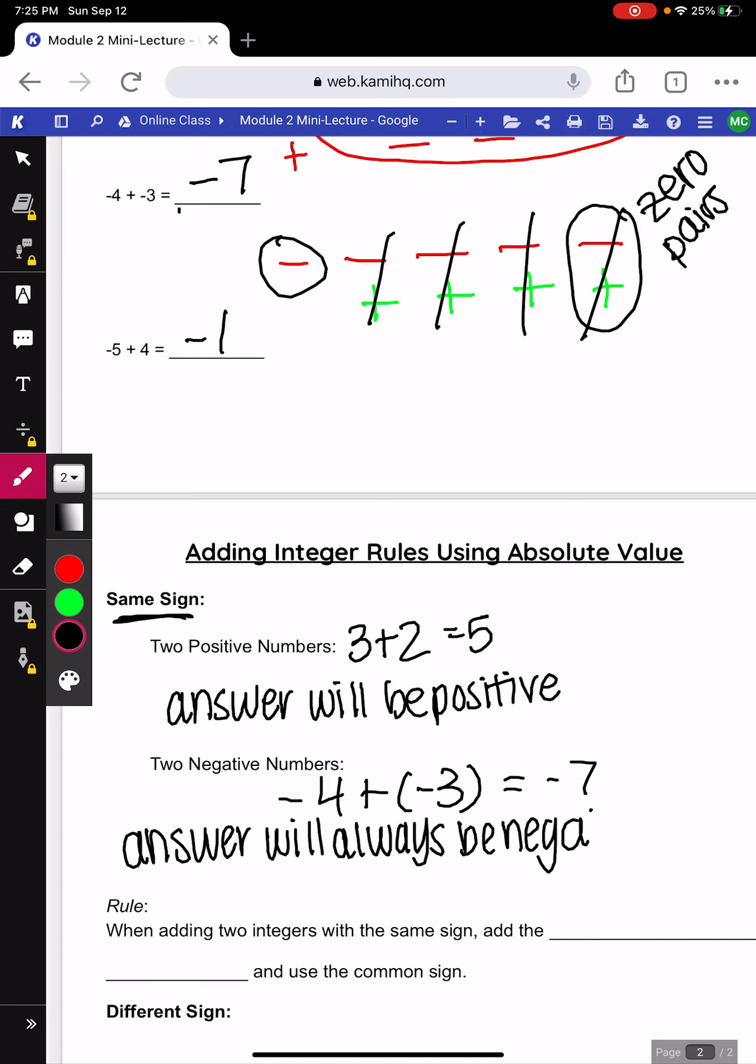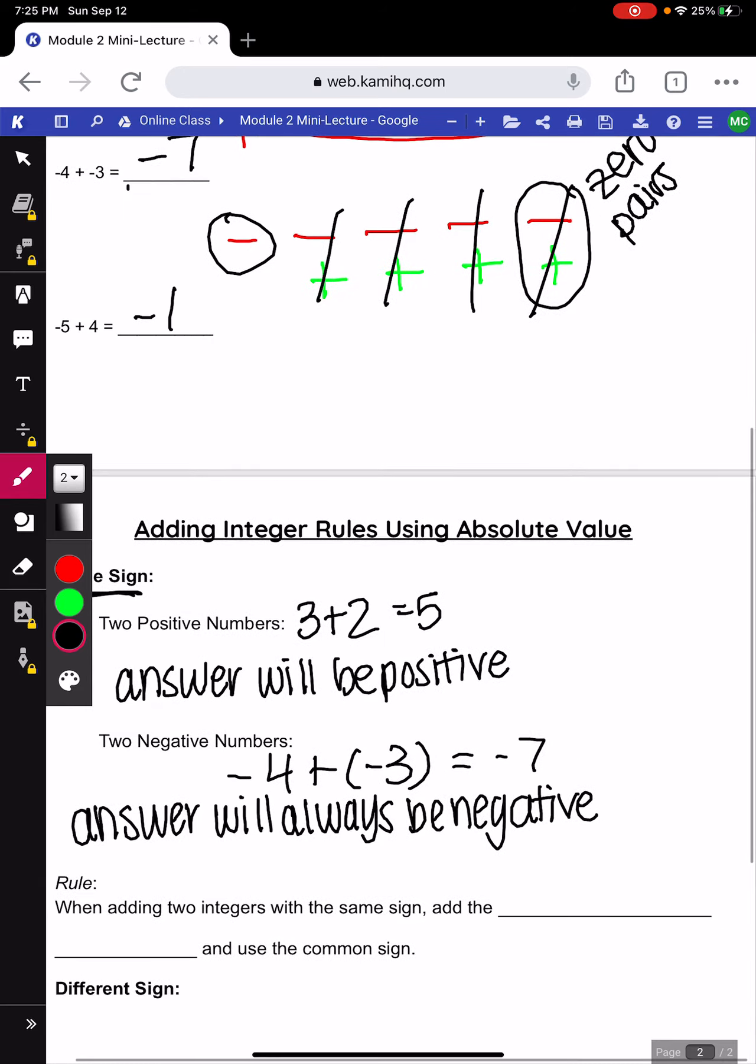And we can look at our absolute values, which we talked about in the last module. So, I know my absolute value of negative 4 is 4. I know my absolute value of negative 3 is 3. I think adding positive numbers is a lot easier than negative. So, as we can see here, 4 plus 3 is 7, and then we keep that common sign of negative.